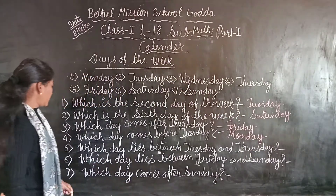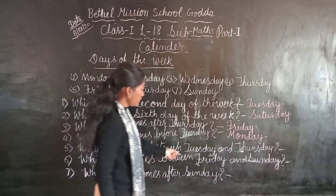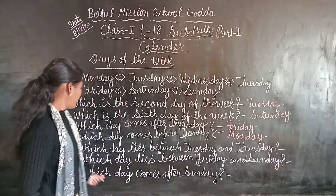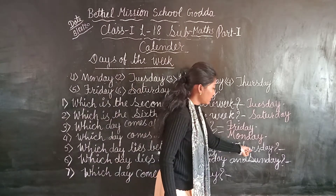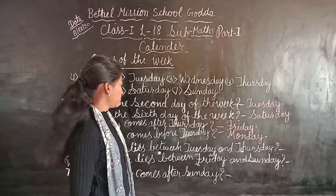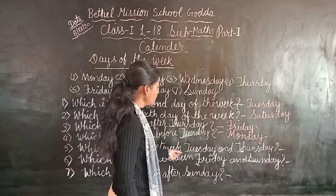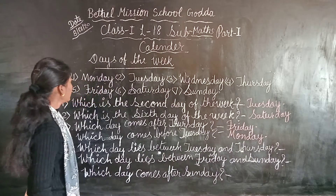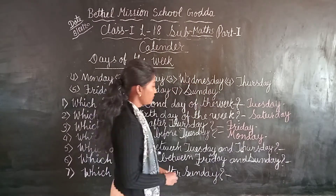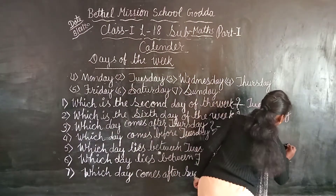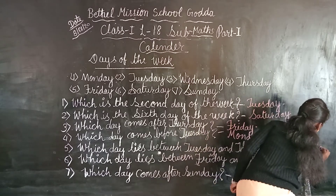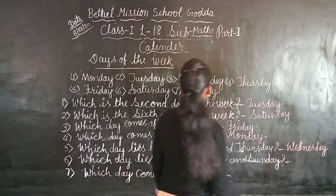Next, fifth question: which day comes between Tuesday and Thursday? Between means Ke Beech. Which day comes between Tuesday and Thursday? We will write Wednesday. Tuesday, Wednesday, Thursday — Wednesday comes between them. We will write here Wednesday.